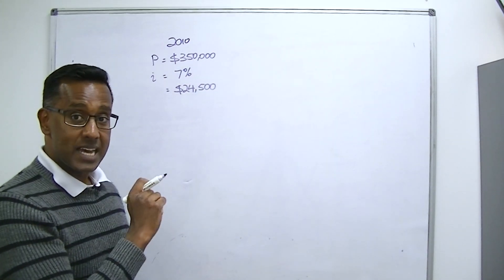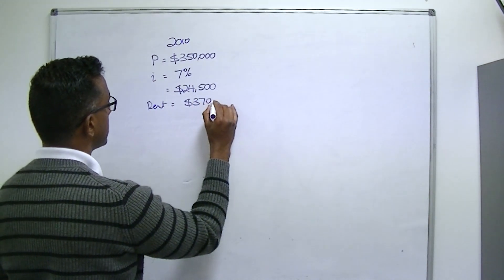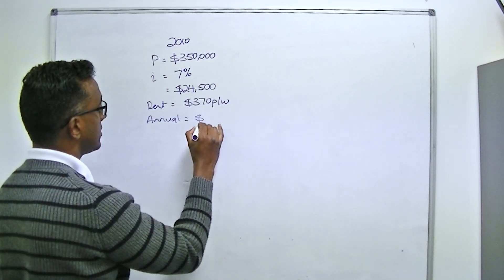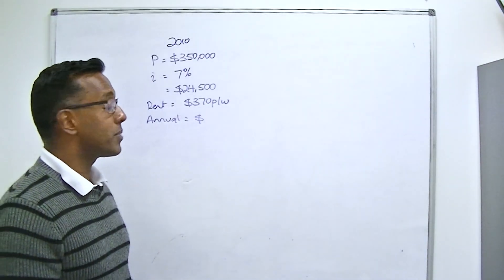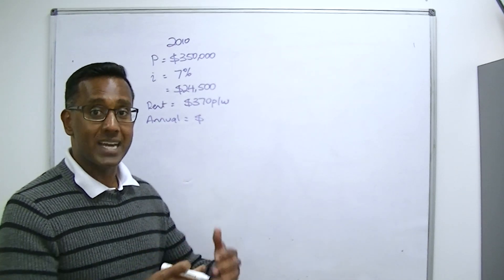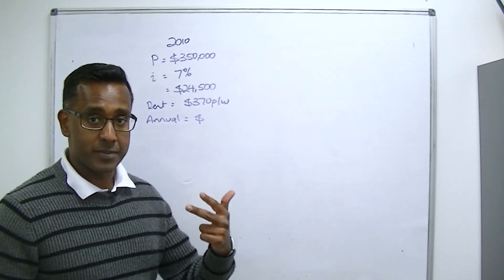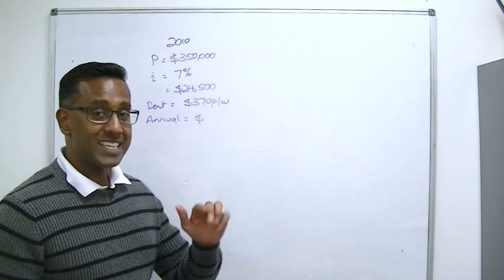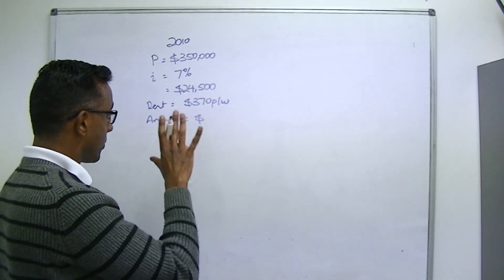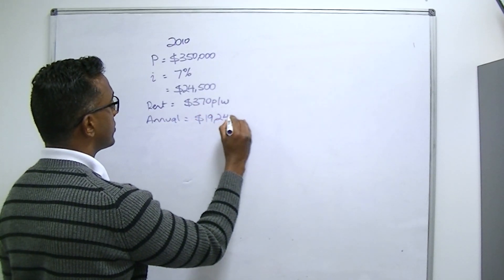So let's begin. In 2010, a client of mine bought a property for a purchase price of $350,000. He and his wife borrowed 100% of the purchase price. The interest rate back in 2010 for them was 7%. That might seem ridiculously high compared to what our rates are today, but that's what they were 10 years ago.